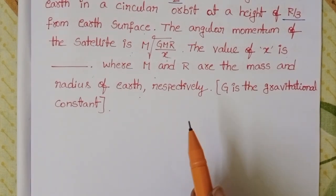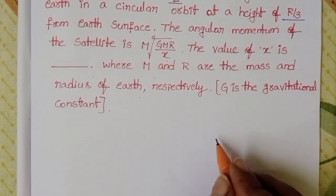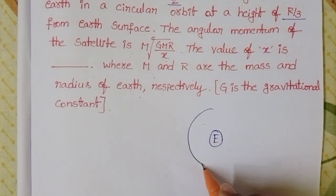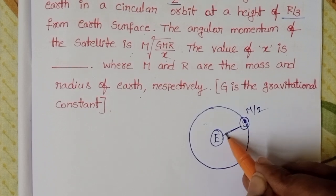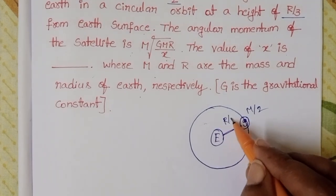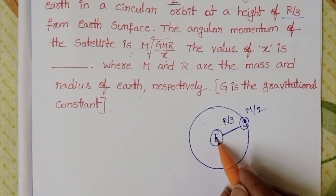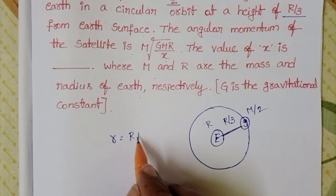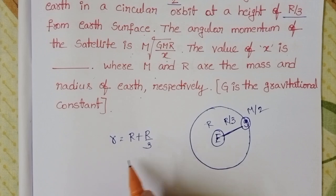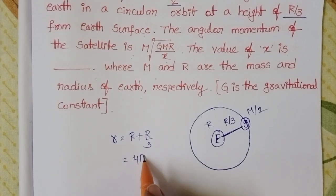A satellite is revolving around Earth in a circular orbit. The distance of the satellite from the surface of Earth is r/3. We know the radius of Earth is r. Then the orbital radius is R equals r plus r/3, which equals 4r/3.